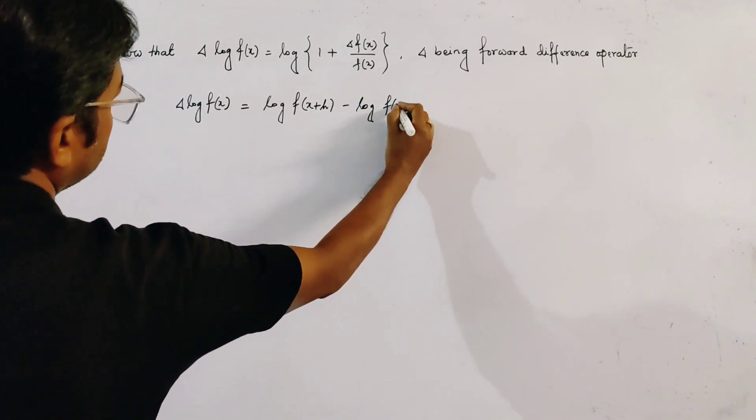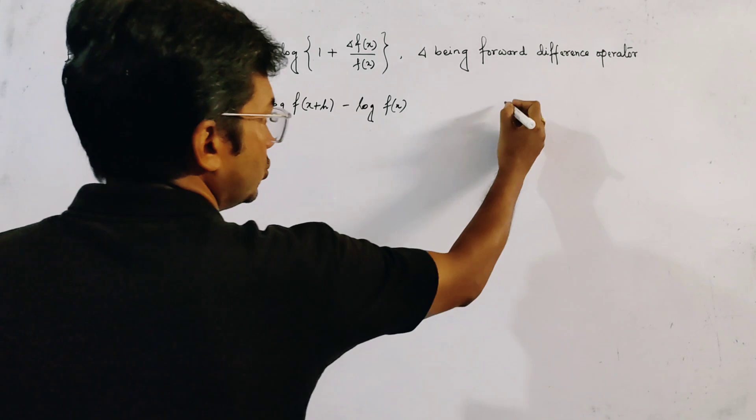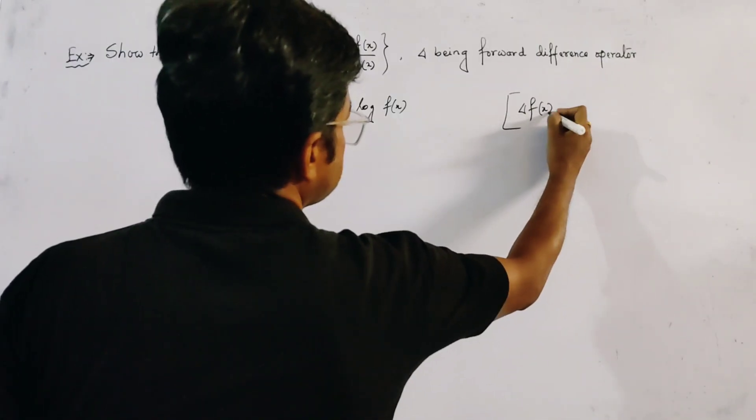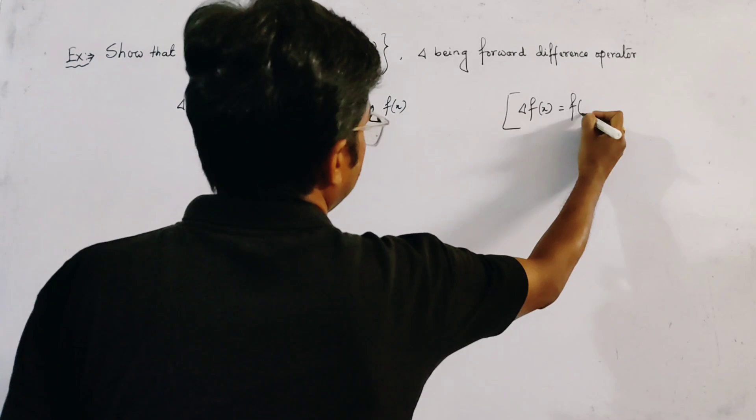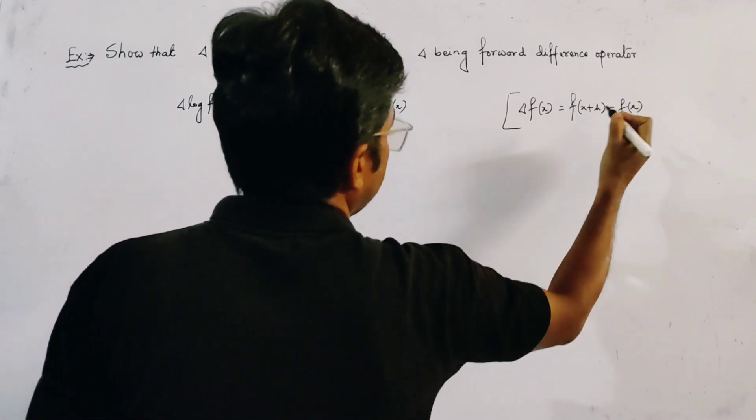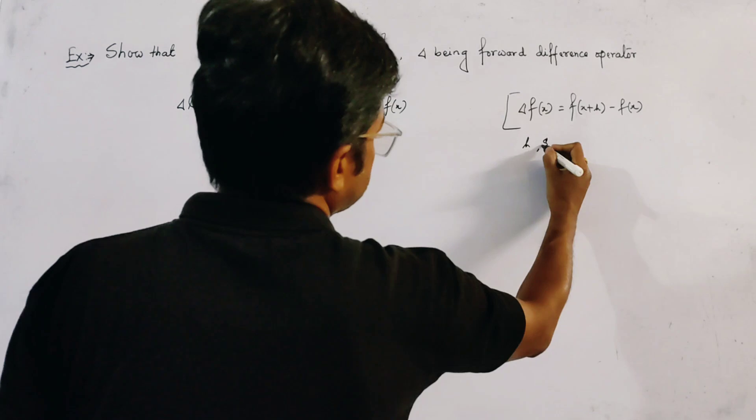Because we know that the definition of delta f of x is given by f of x plus h minus f of x, where h is the step length.